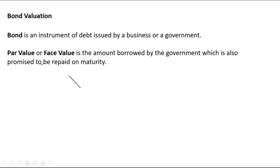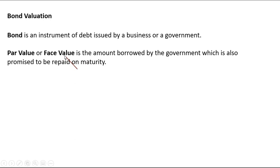On that bond, a par value or face value is written, which is the amount borrowed by the government, and is also promised by the government to be repaid on maturity. For example, if the par value is one lakh rupees, you are giving the government one lakh rupees — that's the par value or face value. Let's say for five years, so after five years the government is going to repay you that one lakh rupees.